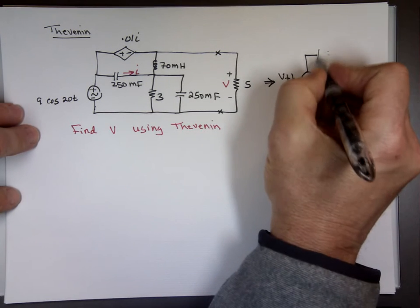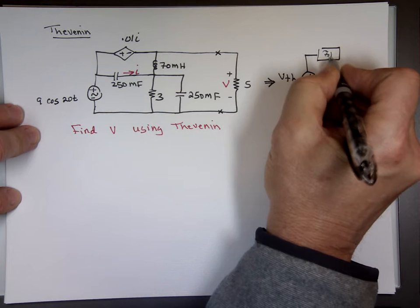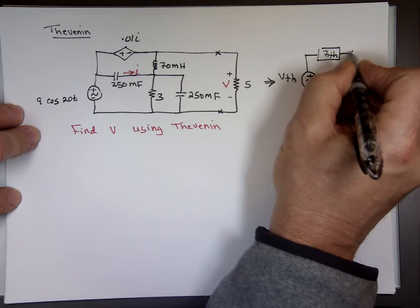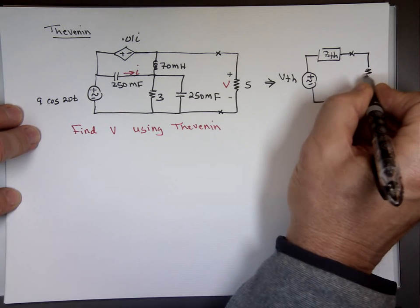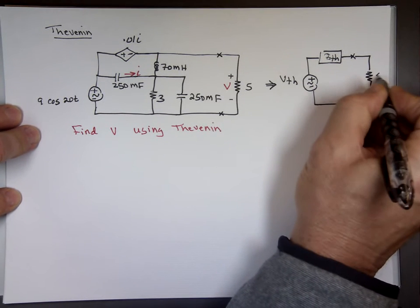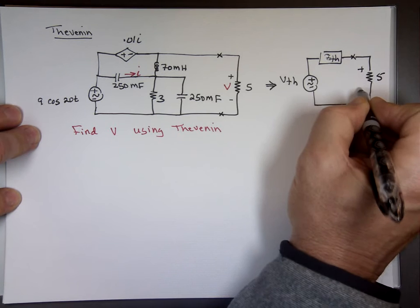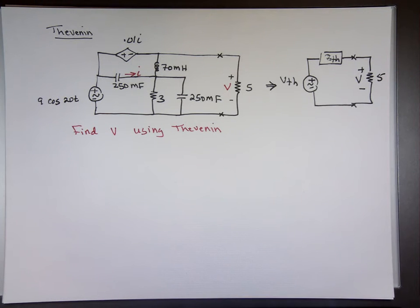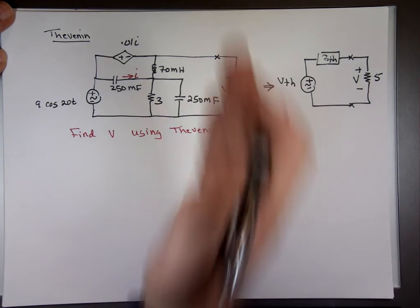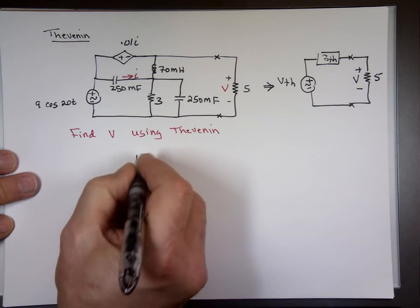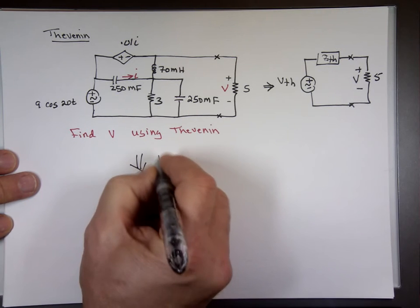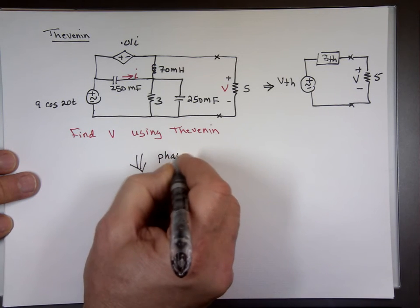I'm going to draw a box there, and there is that resistor of 5 ohms. The question is how do you find V-Thevenin and how do you find Z-Thevenin? Now when you chop this circuit, I'm going to transform it to a phasor and chop it at the same time — change it to a phasor and take that resistor out at the end.